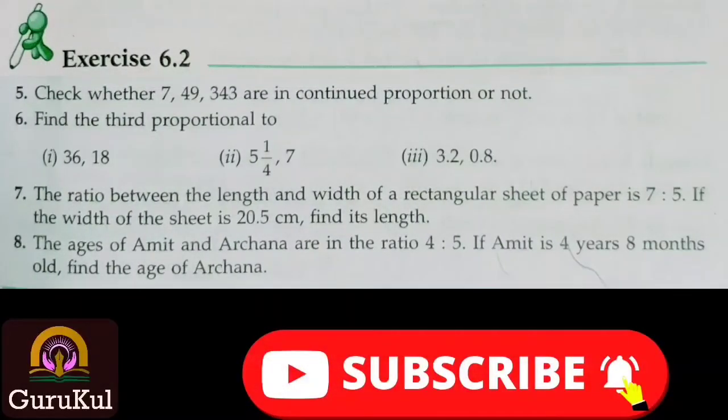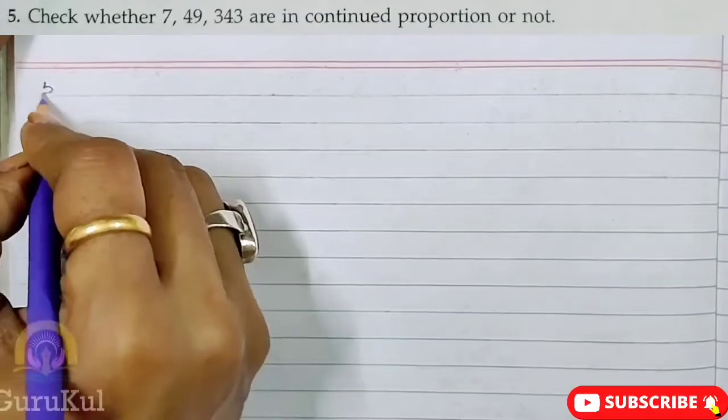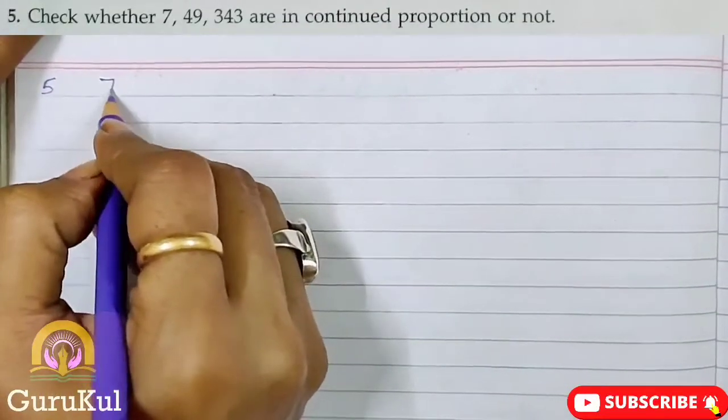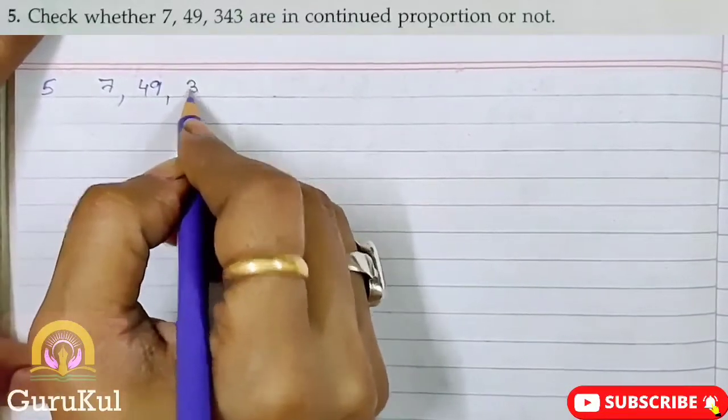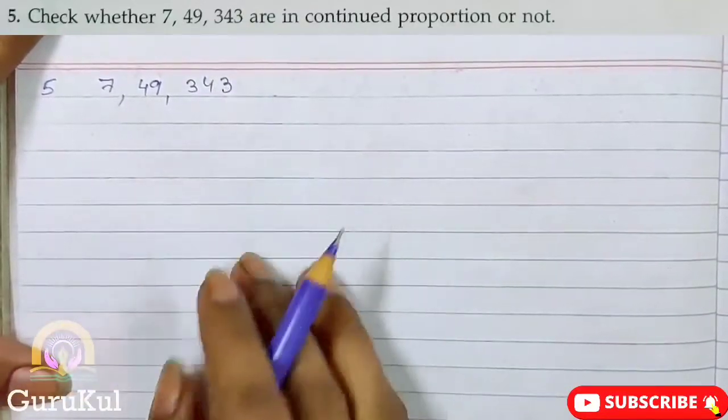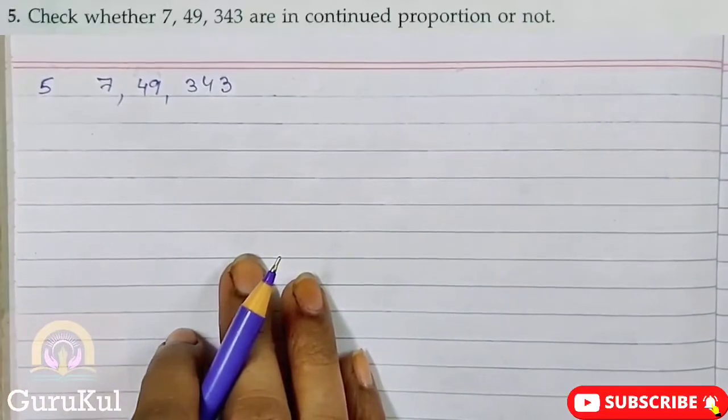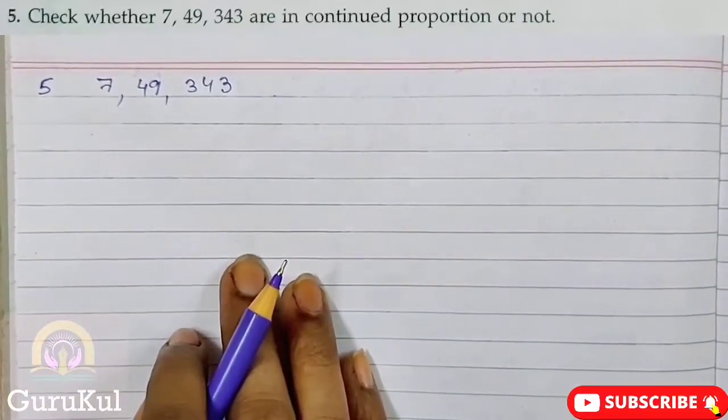Today I am going to start with part 2 of exercise 6.2. Question number 5: Check whether 7, 49, 343 are in continued proportion or not.